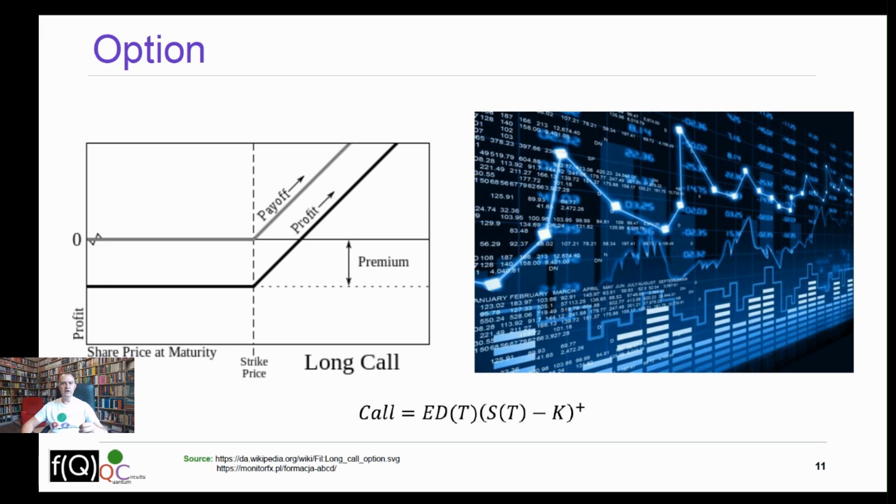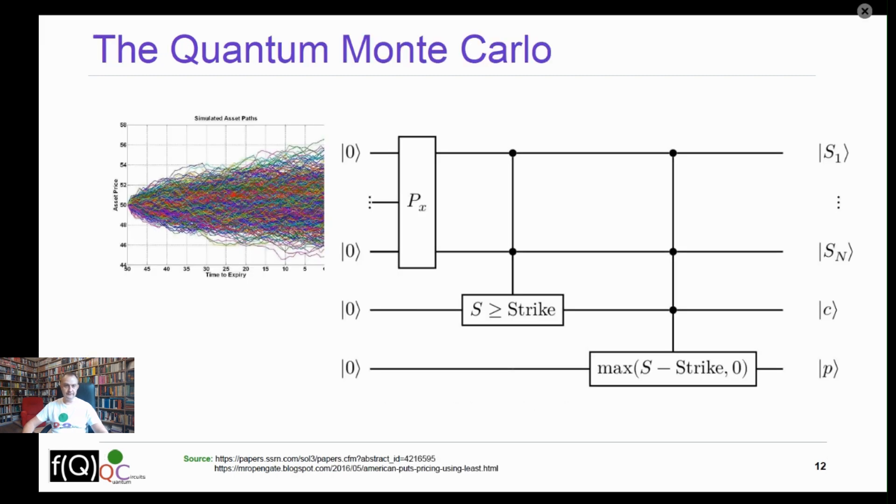But this is not the real probability measure which we can see on the real market. The quantum algorithm looks similar in fashion to the classical one. First, we load the probability distribution of the underlying asset. Next, we calculate the value of the payoff. It's worth noting that the payoff functions are calculated at the same time for all paths. Next, we have to do aggregation of the value and calculate the expected value of the option. The last step is to use quantum amplitude estimation algorithm to extract the option price from the quantum computer.